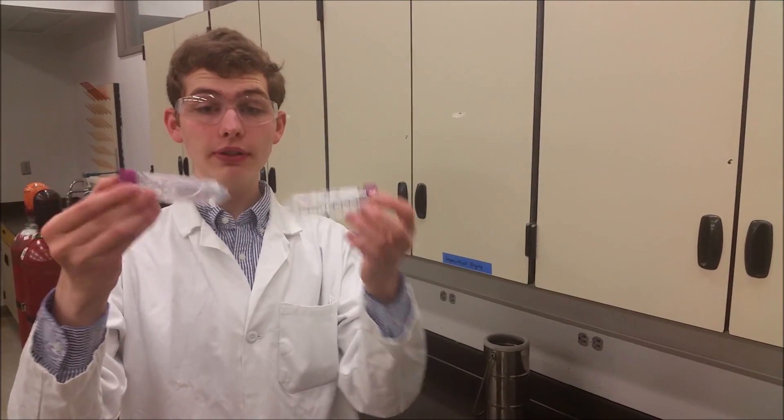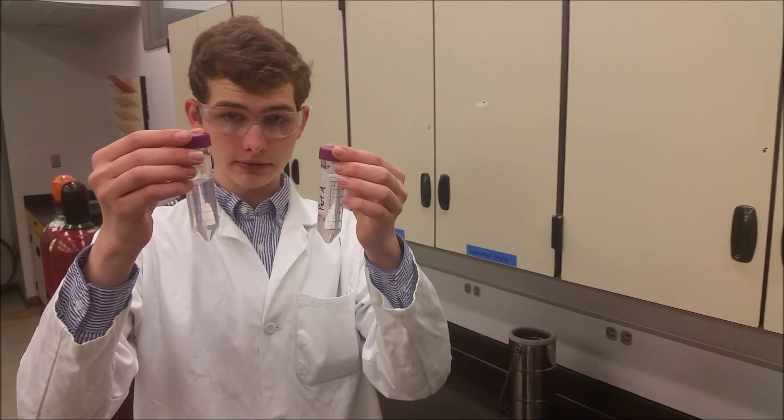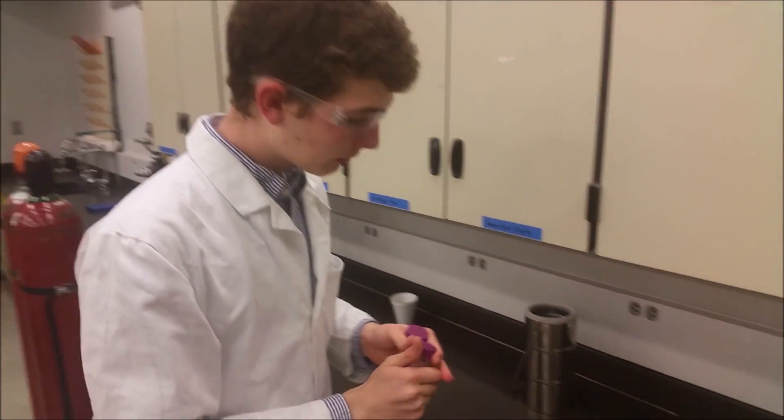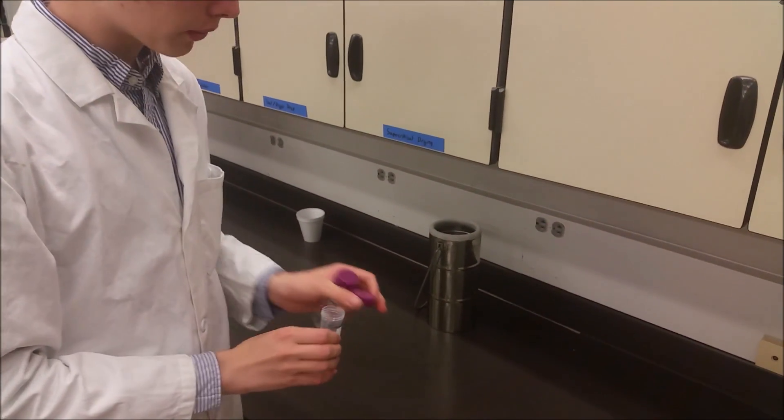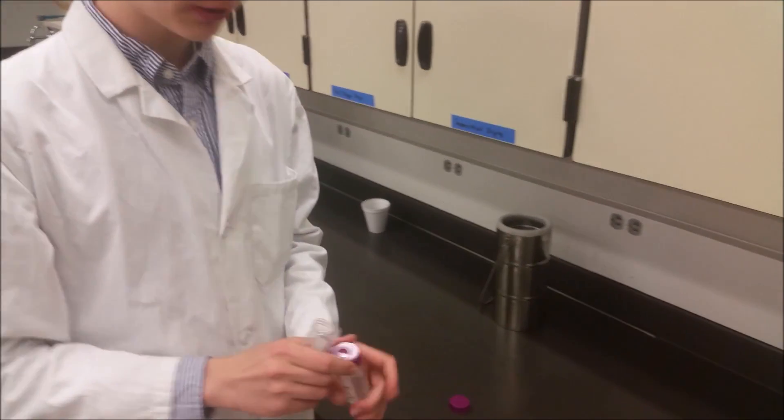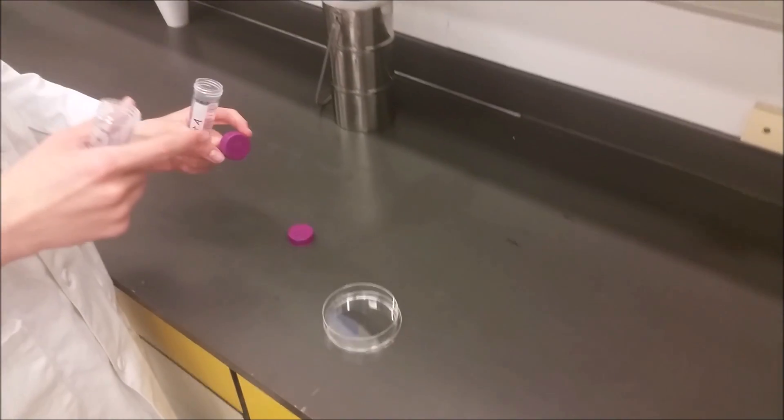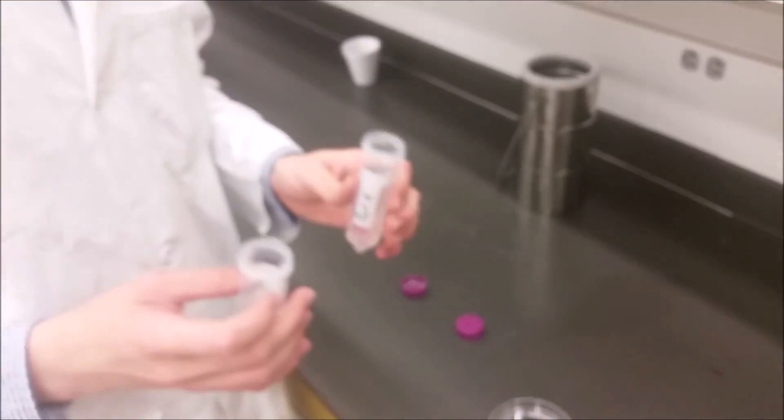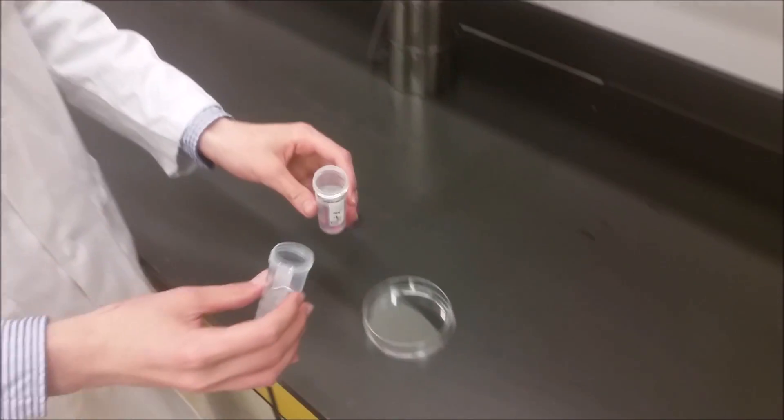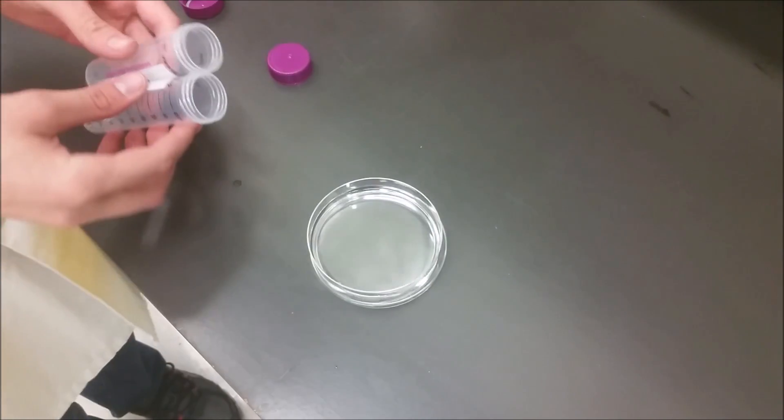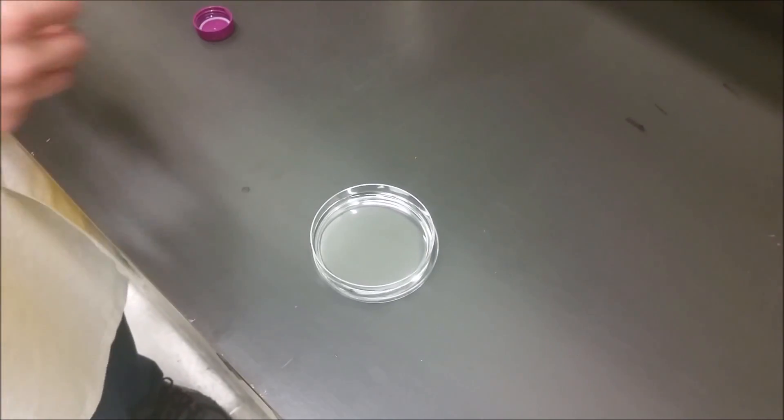So as you can see, these are both very liquid solutions in these vessels. What I'm going to do is pour them both into the same petri dish, and they're going to react with each other to form an alcogel. That's a gel with alcohol in its pores. So we're going to pour it in, and if we're lucky, it's going to happen very quickly.